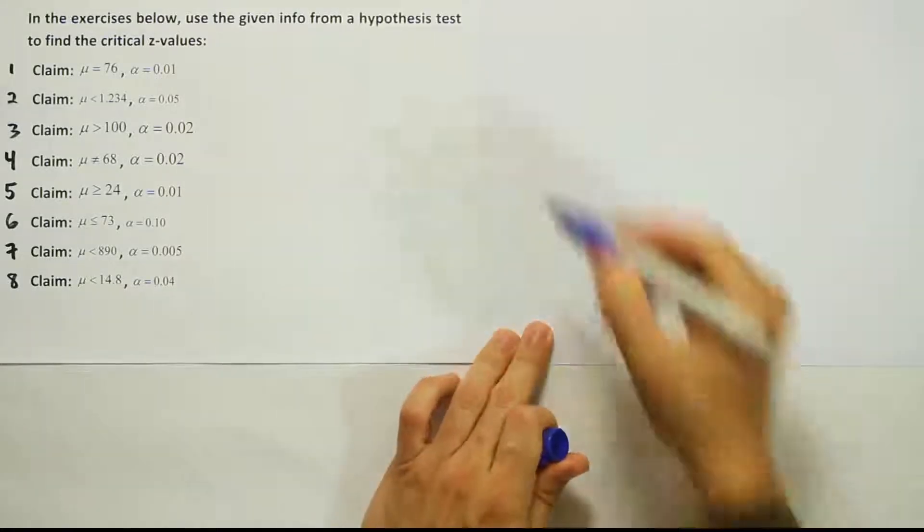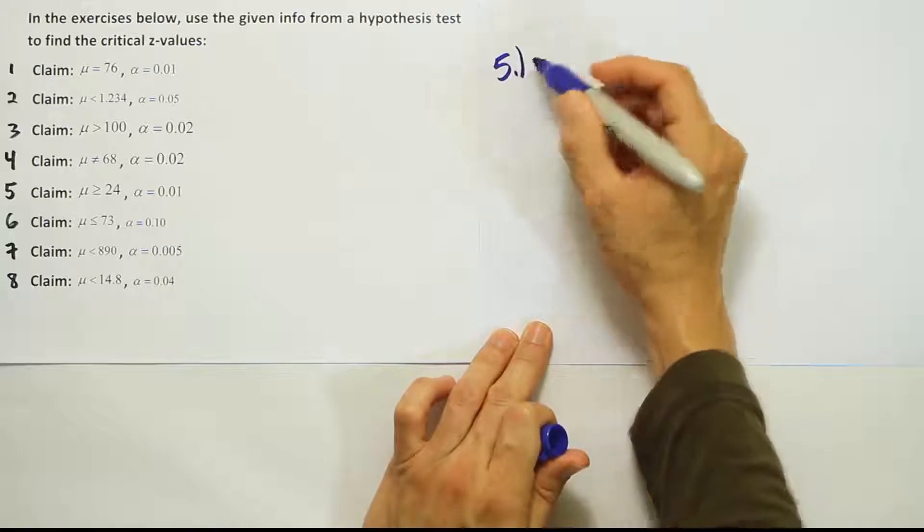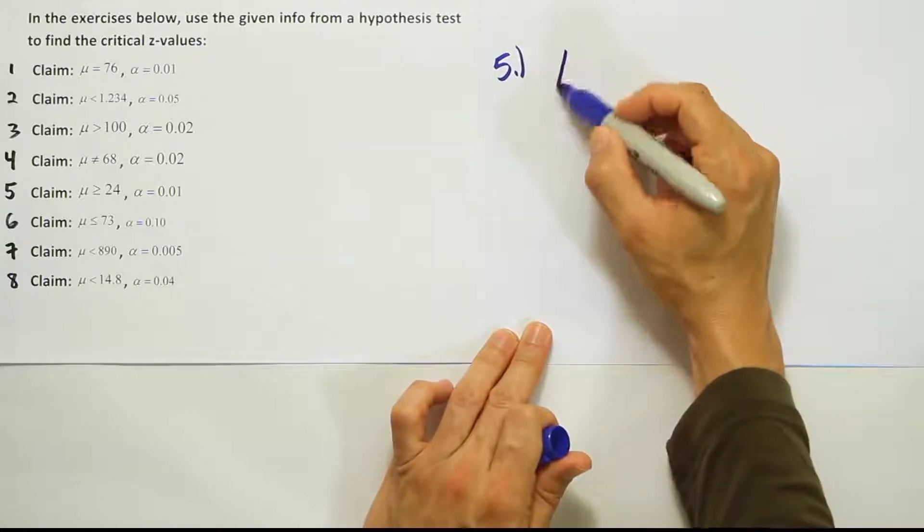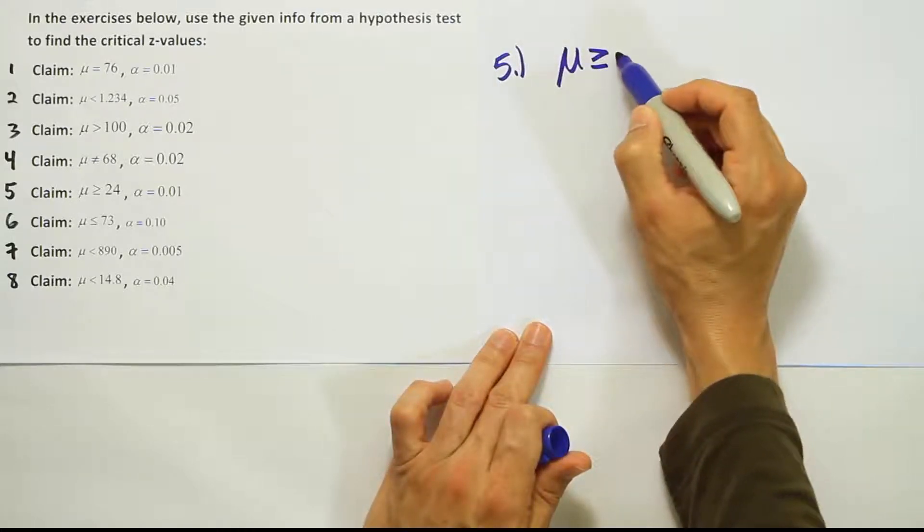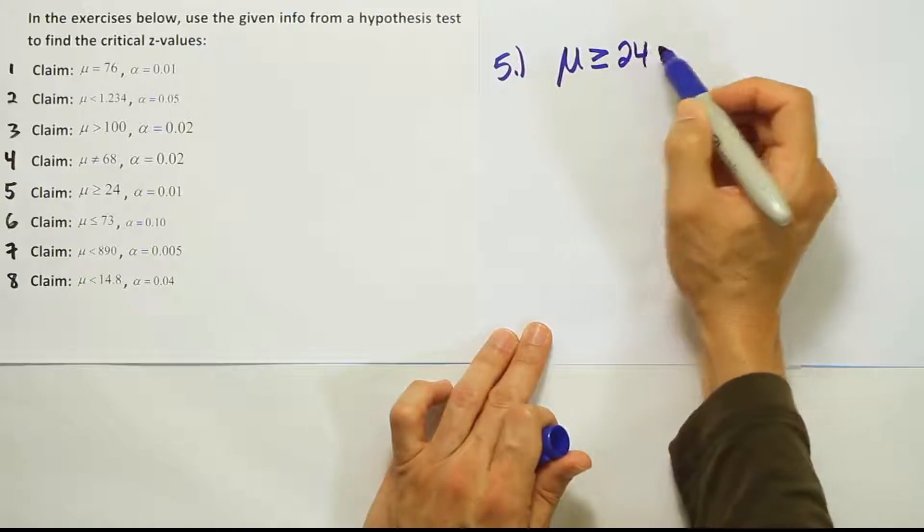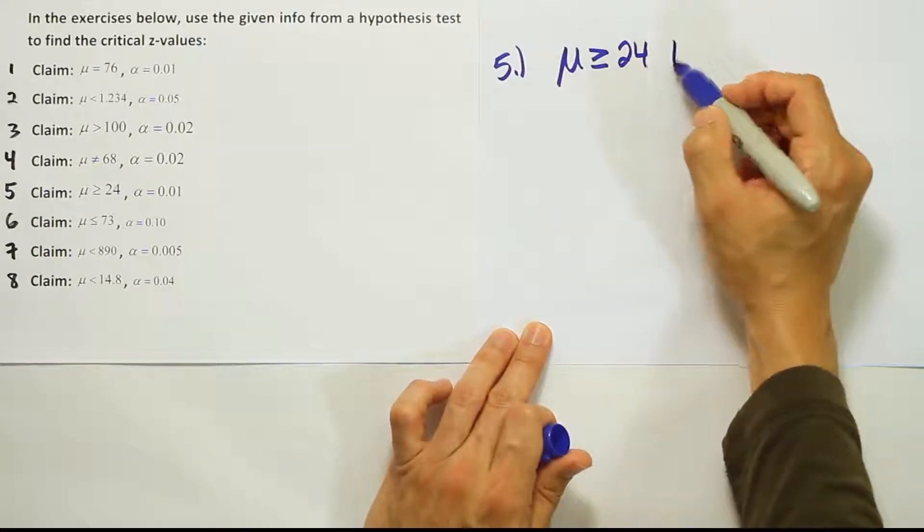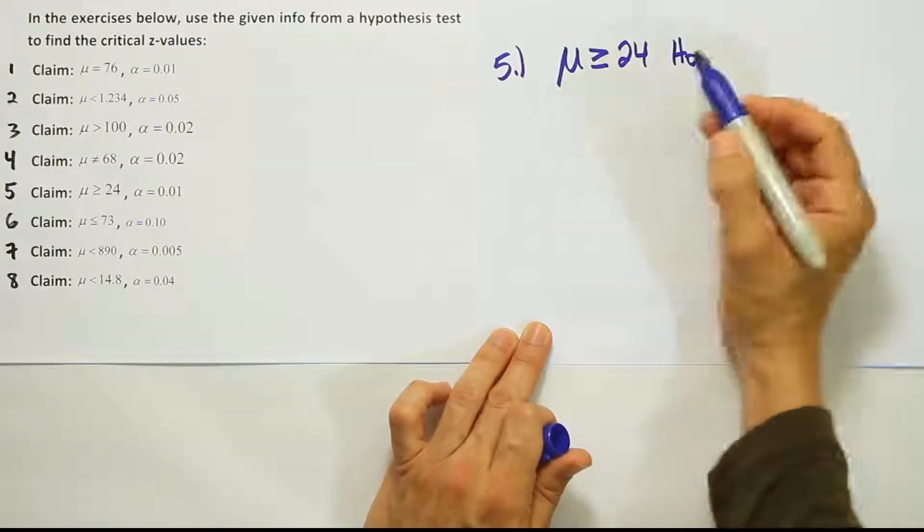Okay, so now we're doing problem number five and the claim here is that the mean is greater than or equal to 24. Well, that's the claim. That claim is H0 because it has an equal to sign.